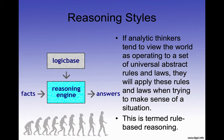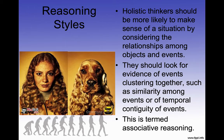If analytic thinkers tend to view the world as operating by a set of universal abstract rules and laws, they will apply these rules when trying to make sense of a situation — this is termed rule-based reasoning. Holistic thinkers are more likely to make sense of a situation by considering the relationships among objects and events, looking for evidence of events clustering together through similarity or temporal contiguity — this is termed associative reasoning.